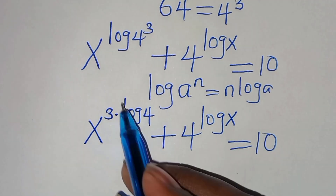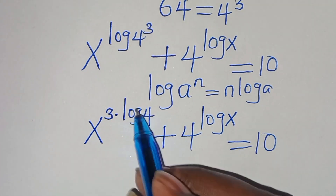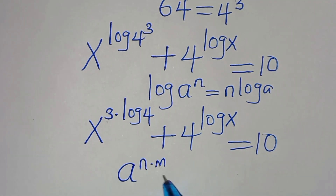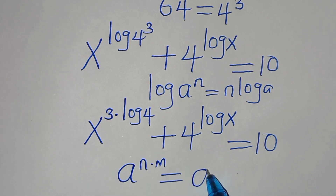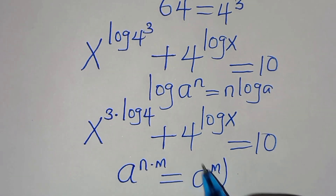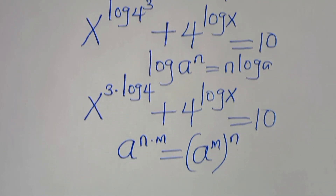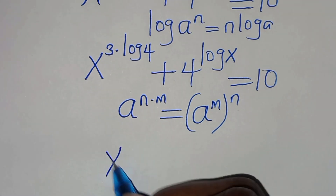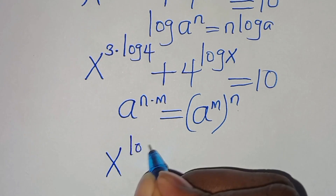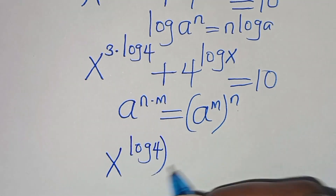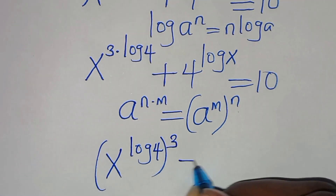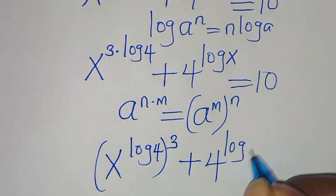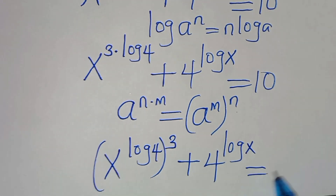Now x to the power of 3·log 4 is in the form a^(n·m), which we can express as (a^m)^n. Applying this exponent property, we get x to the power of log 4, raised to the power of 3, plus 4 to the power of log x, equal to 10.